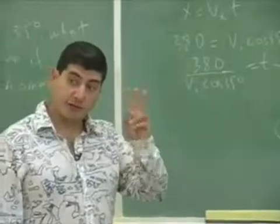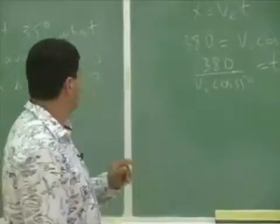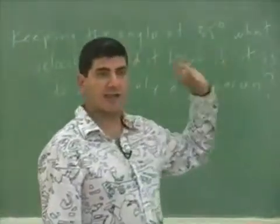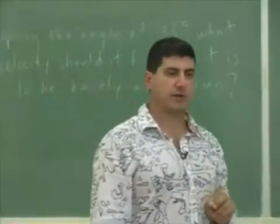Now we could reword the question this way. Part D. Keeping the velocity at 130, what angle do we need so that it's barely a home run?